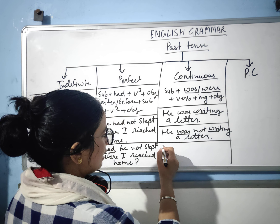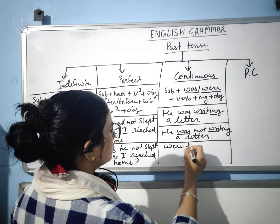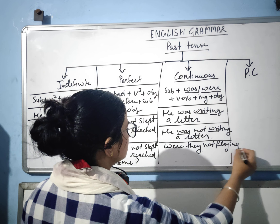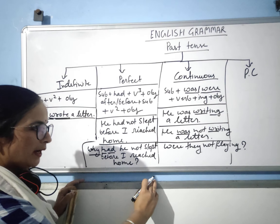In the first type of interrogative, 'was' or 'were' comes at the beginning: 'Were they not playing?' 'They' is a plural subject, so we use 'were.' In the second type of interrogative, use the WH word at the beginning: 'When were they playing?' 'When' is the WH word, followed by the helping verb, then subject, then verb plus ing, and then the object if present.